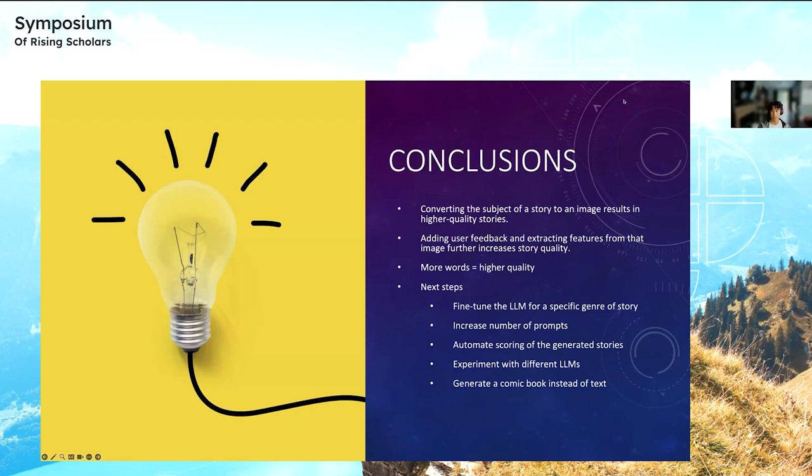To further my project, some next steps I could do are fine-tuning my large language model for a specific genre of story, increasing the number of prompts maybe to a thousand, automate scoring of the generated stories, experimenting with different LLMs. As I mentioned earlier, I used GPT-4, but in the future I could use different models like Meta's Llama model, and I could generate stories in a comic book style using visuals instead of text.